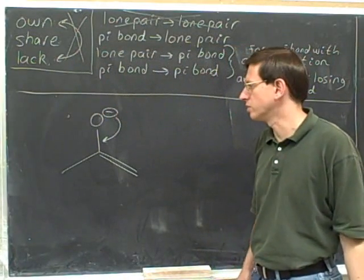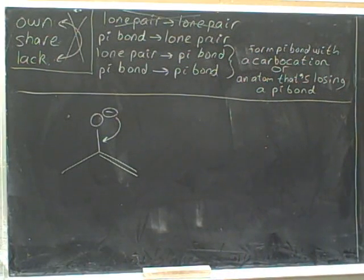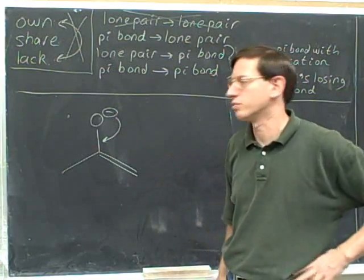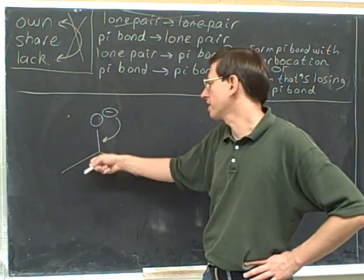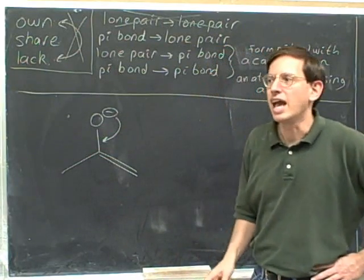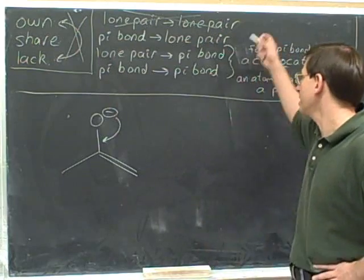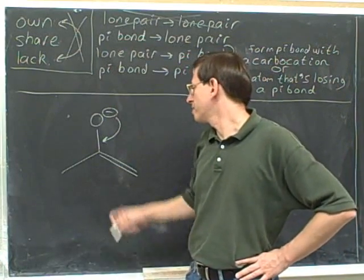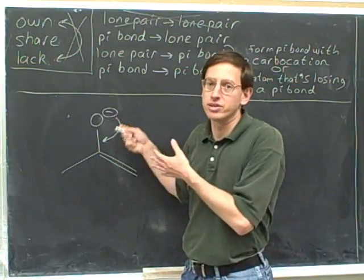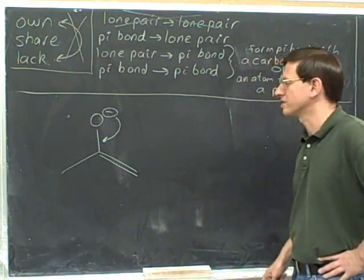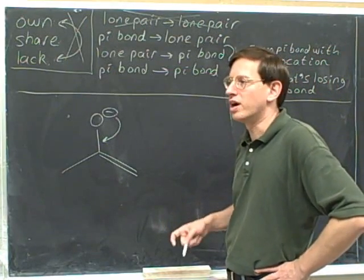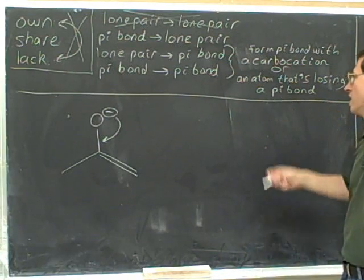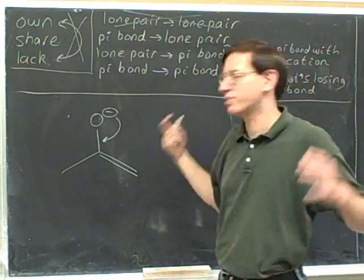Let's decide whether this is a legal electron-pushing arrow for resonance. The head of the arrow is in the bond region, so we know we're forming a pi bond. Anytime you form a pi bond you have to worry about exceeding an octet, and there are only two legal ways. We could be donating to a carbocation — but we're not. Or we could be breaking the pi bond shown — but we're not. So this is not legal; it's going to break the octet rule.